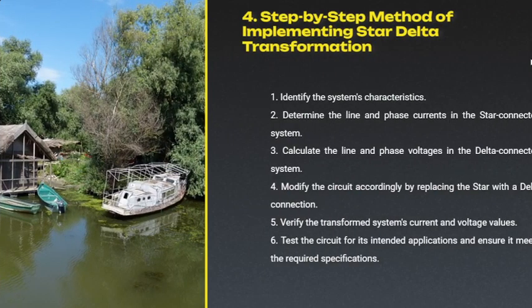Here is the step-by-step implementation of star-delta transformation. First, we have to identify the system characteristics. If it is a star-connected system, we have to identify the line and phase currents. If it is a delta system, we need to identify the line and phase voltages.